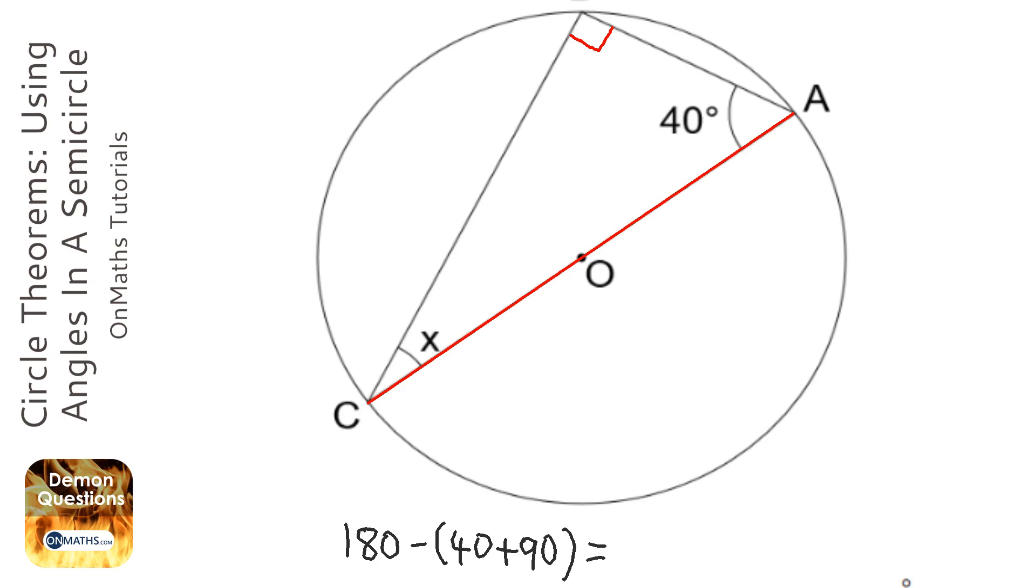Now 40 plus 90 is 130, so therefore x is going to be 50 degrees.